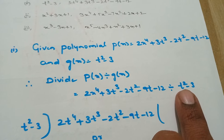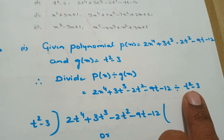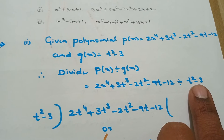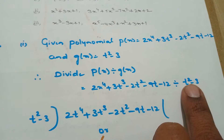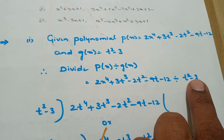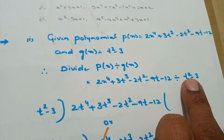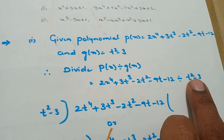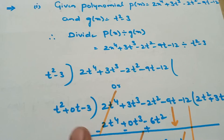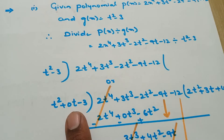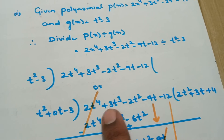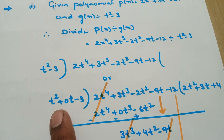What about g(t)? g(t) is not in the standard form; we have to convert it into standard form. The square term is there but there is no t term, so we keep it with zero coefficient. So g(t) becomes t² + 0t - 3. This is the standard form.